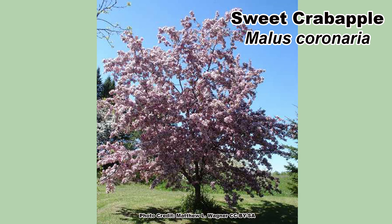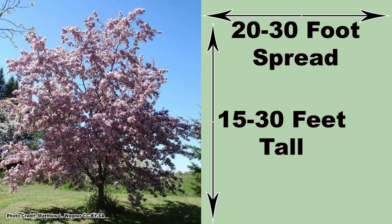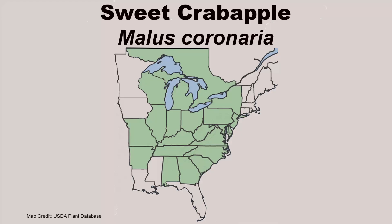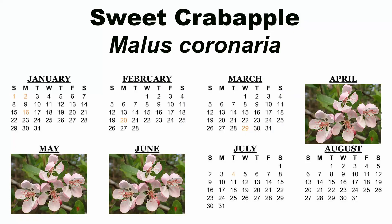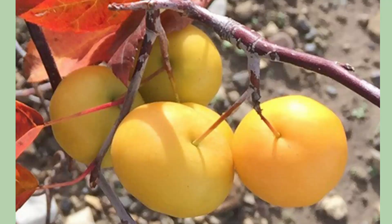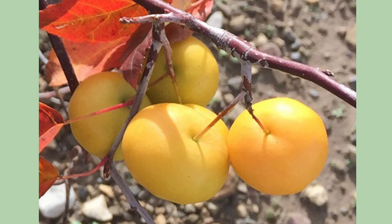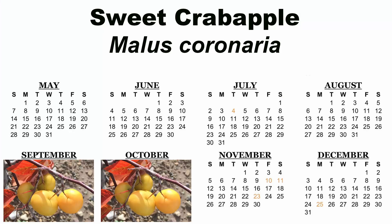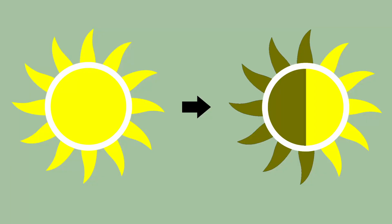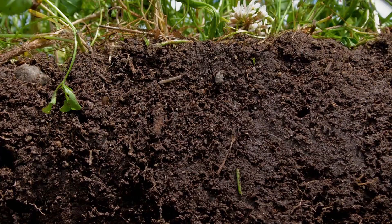Next up is the sweet crab apple, Malus coronaria, a tree that can grow up to 15 to 30 feet tall with a 22-foot spread, found over much of the eastern US and even parts of Canada. It is named for the sweet smell of its blooms. The white to pink flowers appear from April to June depending on location. Its sour three-quarter to one-and-a-half-inch green to yellow-gold fruits, sometimes with a red blush, ripen in September to October. It prefers full sun to partial shade in moist, well-drained soils.